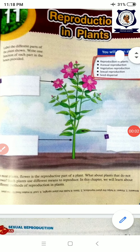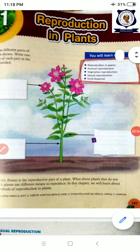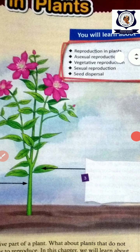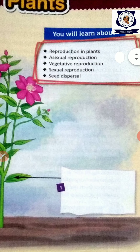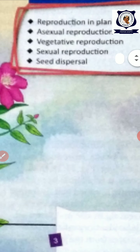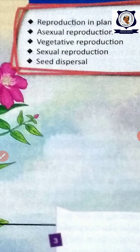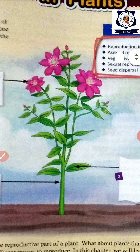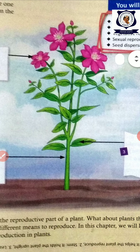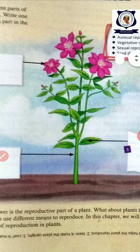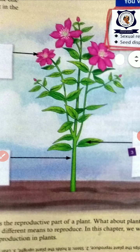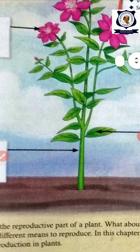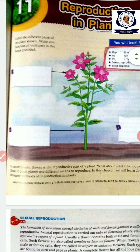Good morning children. In this biology class we are going to see about reproduction in plants. In the last class we studied about asexual reproduction and vegetative reproduction. Asexual reproduction and vegetative reproduction do not really need two kinds of plants, male and female, but sexual reproduction needs male and female gametes.